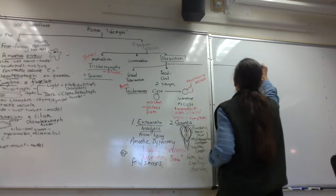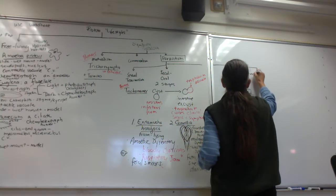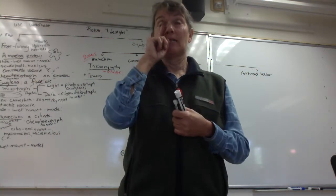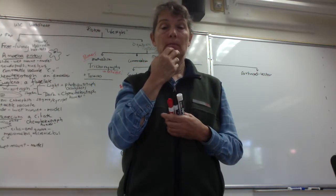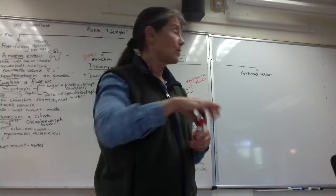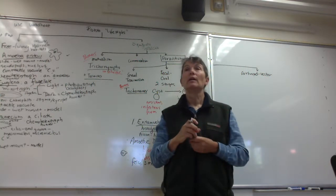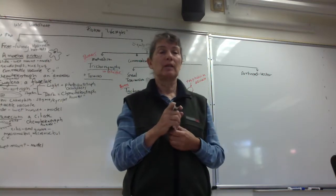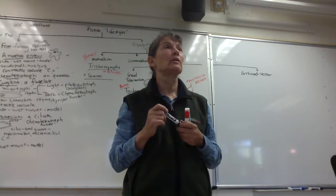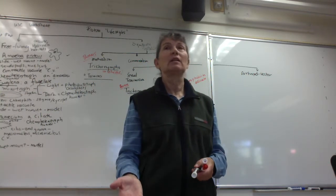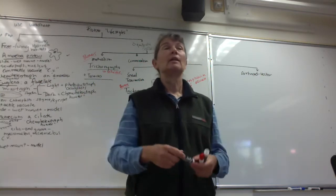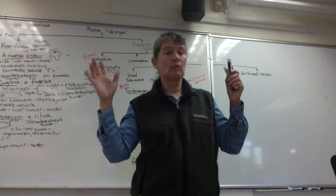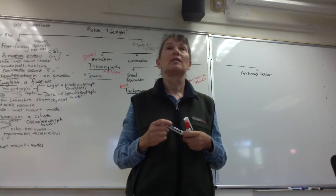The last ones we'll do are arthropod vector transmitted protists — specifically blood-feeding insects or blood-feeding arachnids like ticks. There are three pathogens, each with a different arthropod vector. Knowing the arthropod vector is really important because if you're in an area where the vector doesn't live, you shouldn't have local transmission. But if the arthropod vector lives in your area, you can have local transmission. You need to be an ecologist to understand infectious disease transmission.